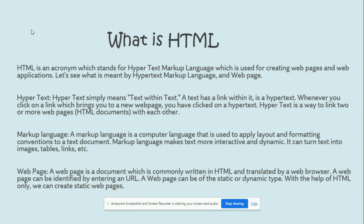And what is markup language? Markup language is a computer language that is used to apply layout and formatting. It is used for images, text, and factors like tables, links, etc. Markup language makes text more interactive and dynamic.